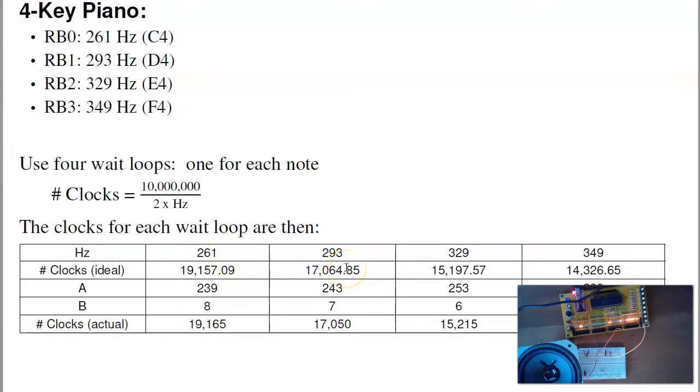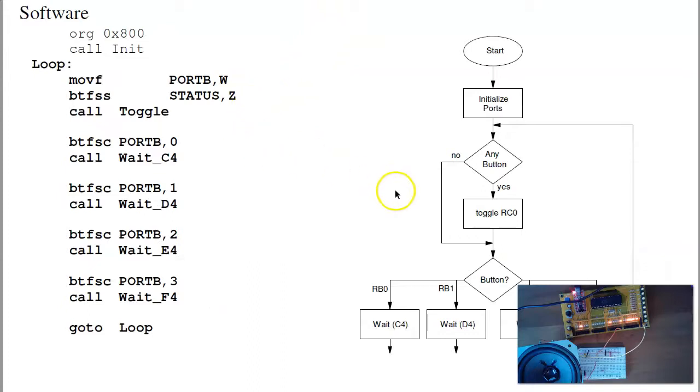To play the note D4, I want to wait 17,064 clocks, 15,000, 14,000 clocks. And a way to do that is first have the main routine just check to see which button you're pushing. Based upon the button, I'll call the wait loop.